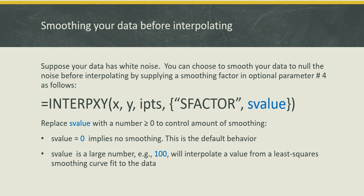If your data is noisy and you would like to filter the noise out before performing the interpolation, you can take advantage of the S-factor key in optional parameter number four. And you would supply some value for this key. A zero value implies there is no smoothing and this is the default behavior. If you supply a large value like a hundred, then the interpolation will be based on a least squares smoothing curve fit to the data.